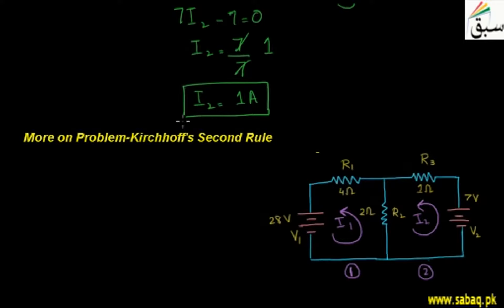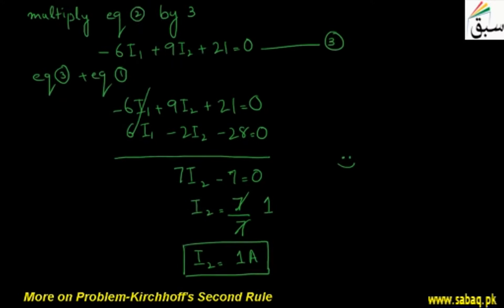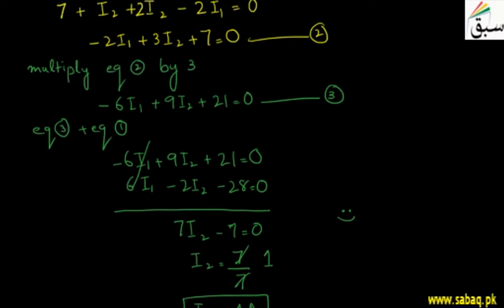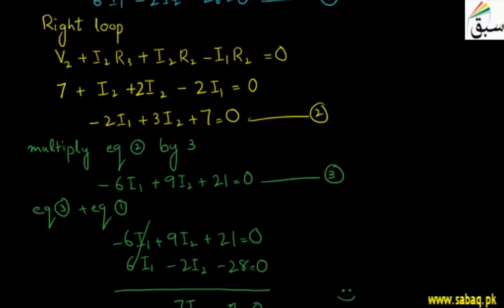As we have determined I2, which is 1A, now we have the second current I1. We will use the value of I2. We will put the value of I2 in any equation which we have before.